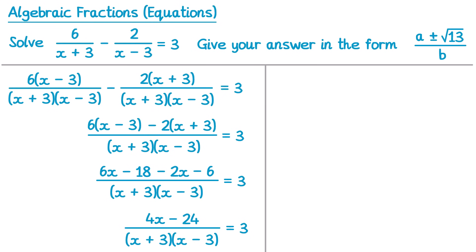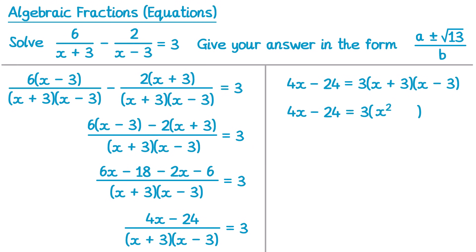Then we would multiply both sides by that denominator, x plus 3, x minus 3. This will clear the fraction on the left hand side, so you've just got 4x minus 24, but on the right hand side we have 3 lots of x plus 3, x minus 3. This one's the difference of two squares. If we do x times x we get x squared, x times negative 3 gives negative 3x and positive 3 times x gives positive 3x so those cancel, and then 3 times negative 3 is negative 9. So we have 4x minus 24, and expanding the bracket: 3 lots of x squared is 3x squared, and 3 lots of negative 9 is negative 27.